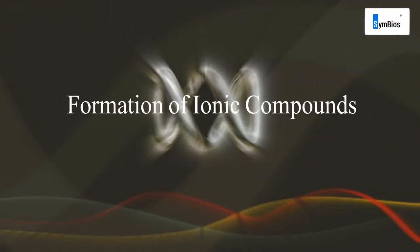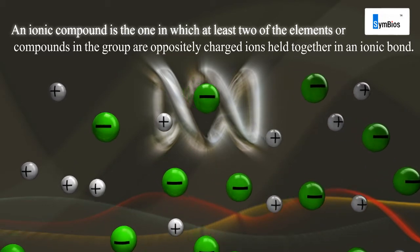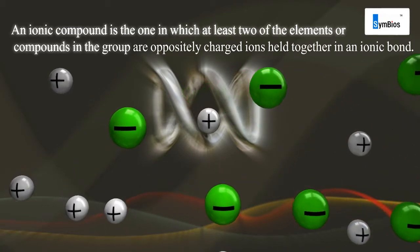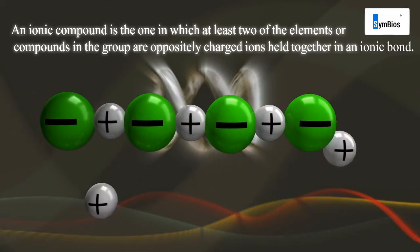Formation of ionic compounds. An ionic compound is one in which at least two of the elements or compounds in the group are oppositely charged ions held together in an ionic bond.